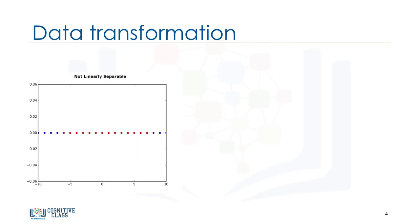For the sake of simplicity, imagine that our dataset is one-dimensional data. This means we have only one feature X. As you can see, it is not linearly separable. So, what can we do here? Well, we can transfer it into a two-dimensional space.